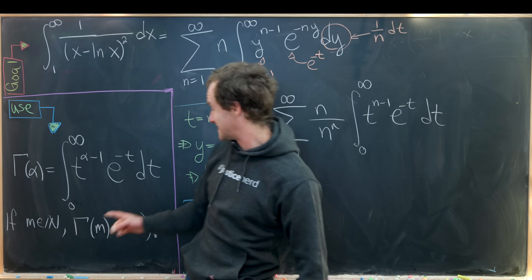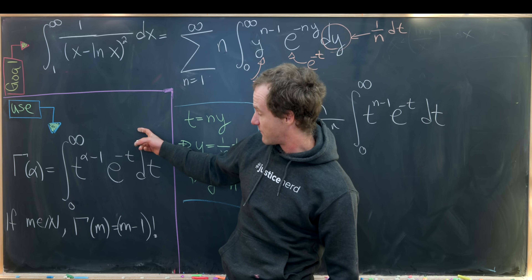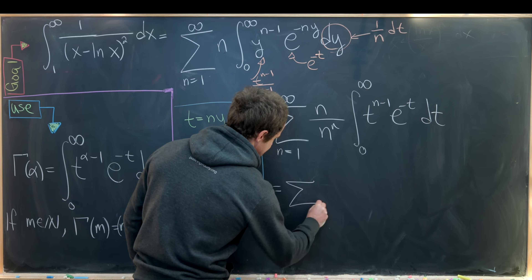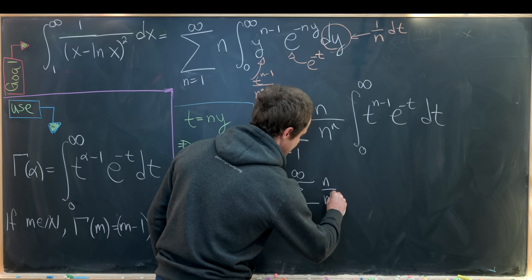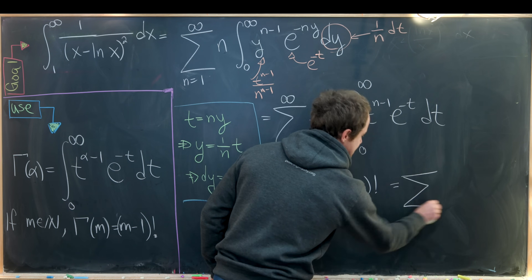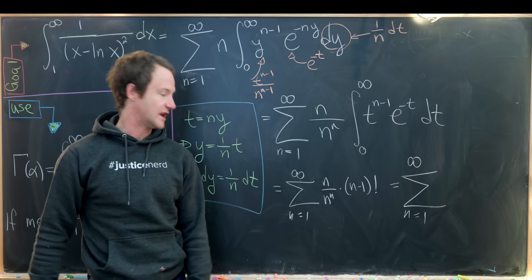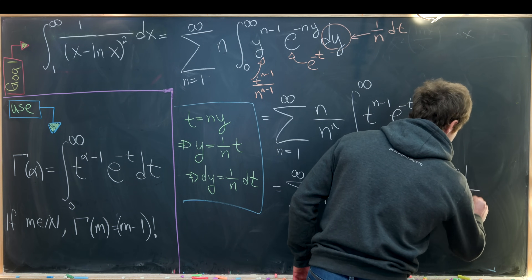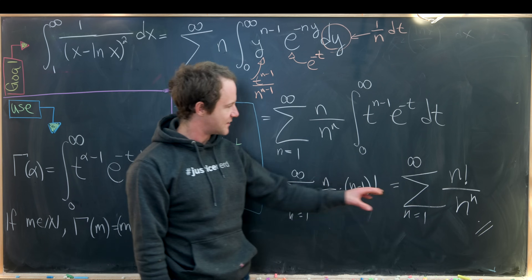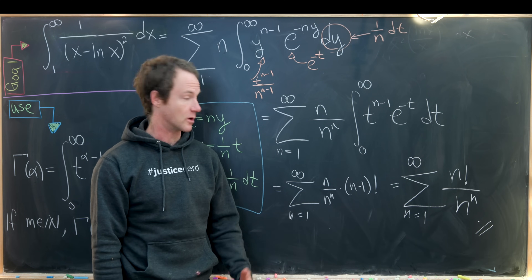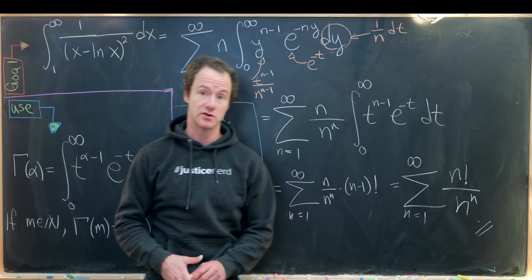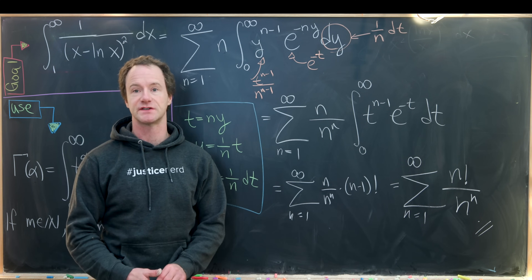That integral is exactly the gamma function evaluated at n, which equals (n−1)! for natural numbers. So we get the sum as n goes from 1 to infinity of n times (n−1)! / n^n, which simplifies to the sum of n! / n^n. This is the series expression for the original integral, and since we showed the integral converges, this series also converges.